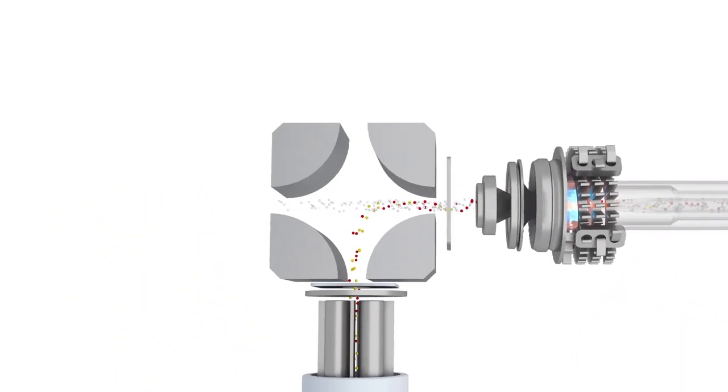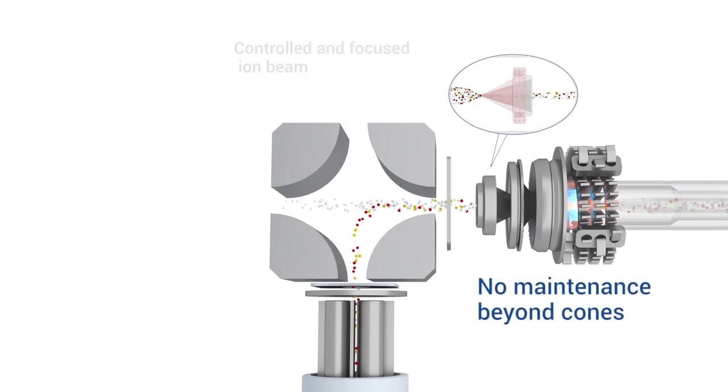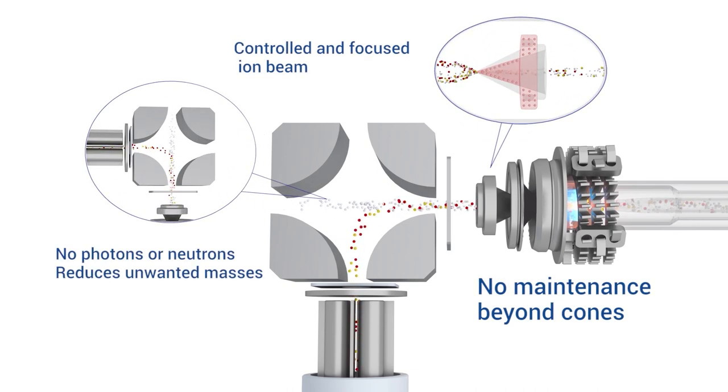The plasma is generated by the proprietary LumiCoil RF load coil, which is guaranteed for life and requires no water or gas cooling. And the unique combination of the triple cone interface and quadrupole ion deflector controls and focuses the ion beam in the downstream ion optics, ensuring that the universal cell requires no cleaning or replacing.